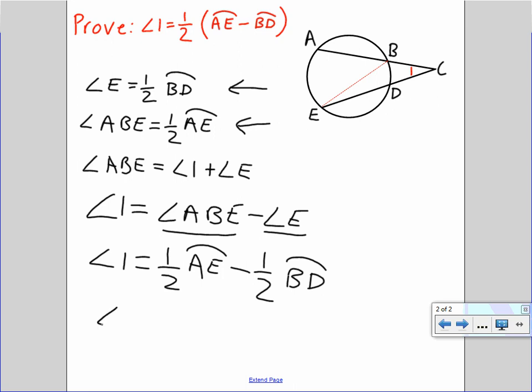And by distributive property, we have completed the proof. Angle 1 is half of the measure of arc AE minus arc BD. So that's part two of theorem 12-11.